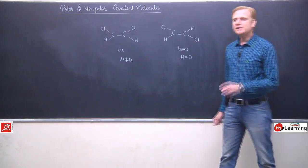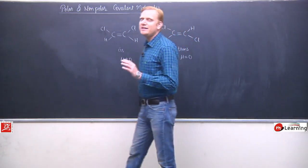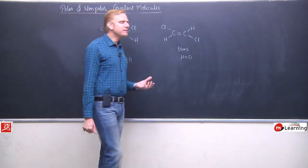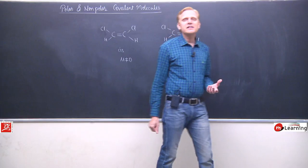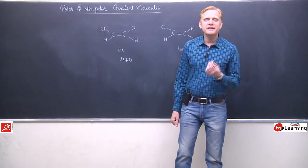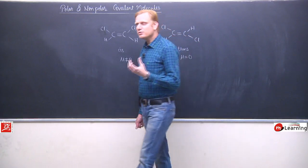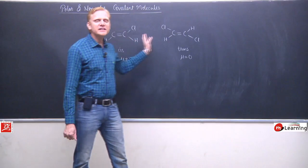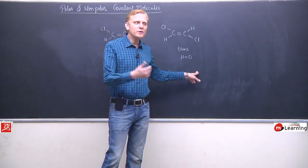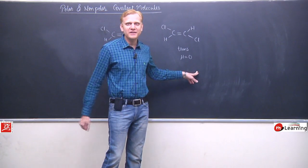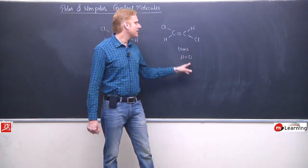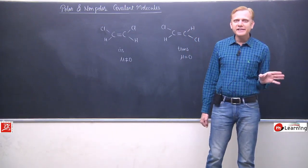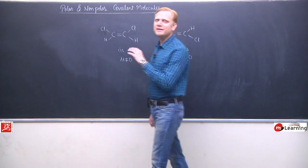When you study geometrical isomerism in alkenes and all these things come, a very simple conclusion emerges: for symmetrical alkenes, cis isomers have higher dipole moment, whereas trans isomers have lower or zero dipole moment. If symmetrical alkenes, then trans isomer's dipole moment will be zero. If it's not symmetrical, then it will be less compared to cis.